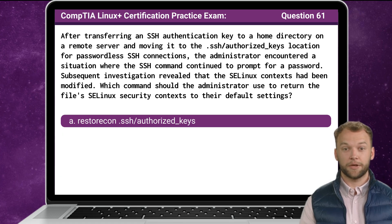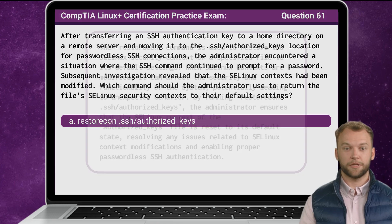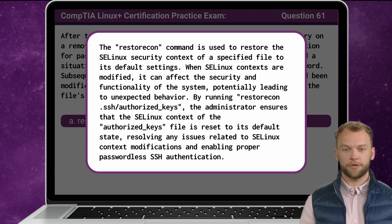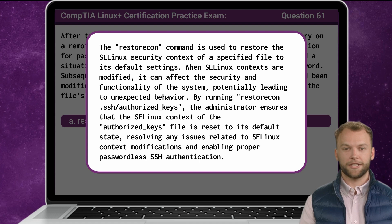The answer is A: restorecon .ssh/authorized_keys. The restorecon command is used to restore the SELinux security context of a specified file to its default settings. When SELinux contexts are modified, it can affect the security and functionality of the system, potentially leading to unexpected behavior. By running restorecon .ssh/authorized_keys, the administrator ensures that the SELinux context of the authorized_keys file is reset to its default state, resolving issues related to SELinux context modifications and enabling proper passwordless SSH authentication.